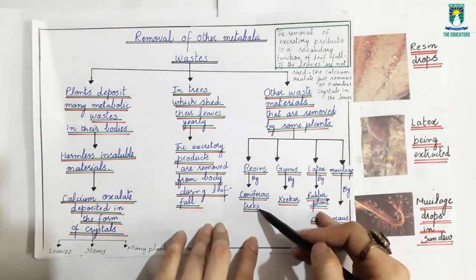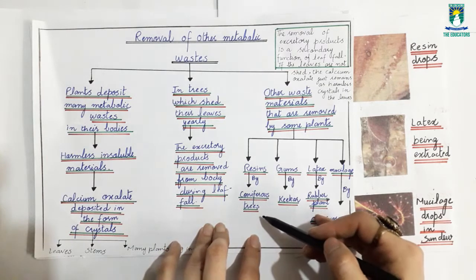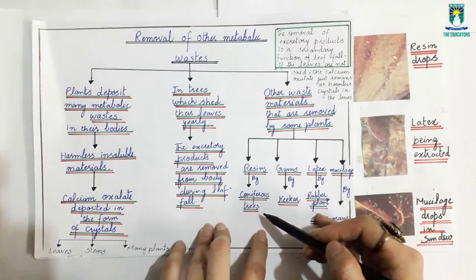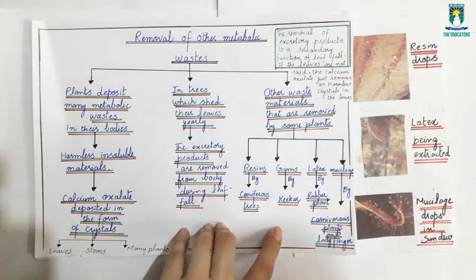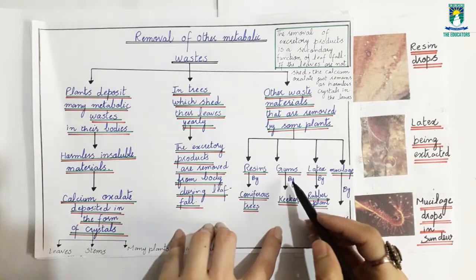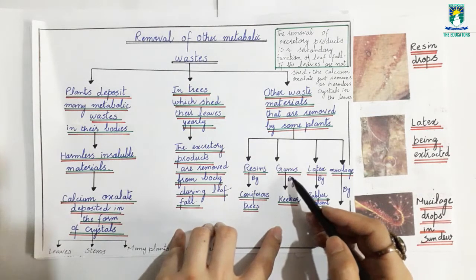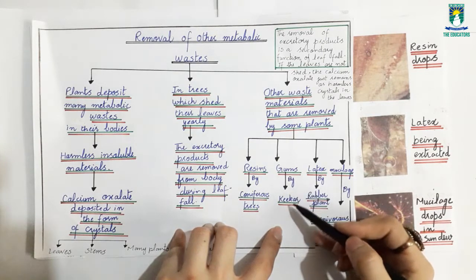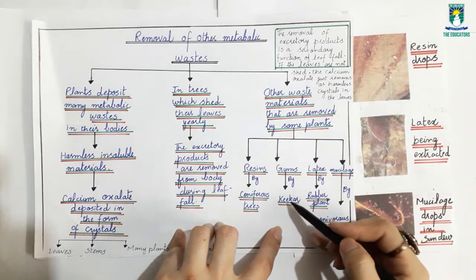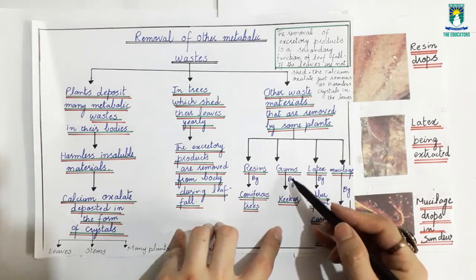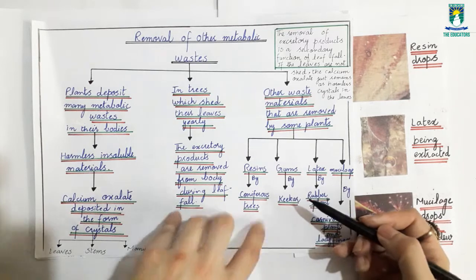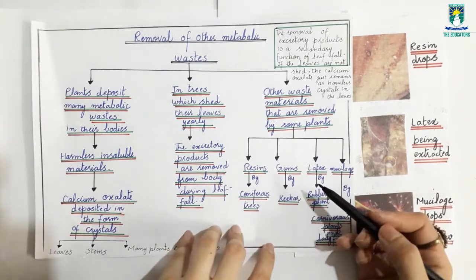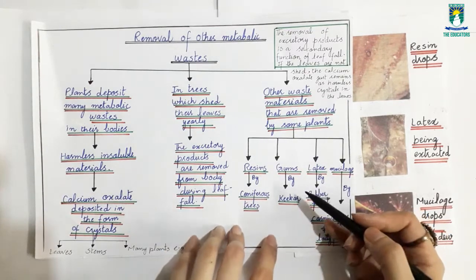Coniferous trees have needle-like leaves and cones. Gums are another type of metabolic waste — they are also a sticky material released by certain plants and are used in adhesives.